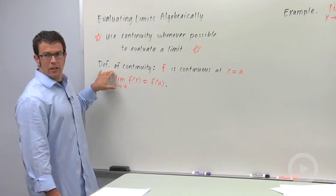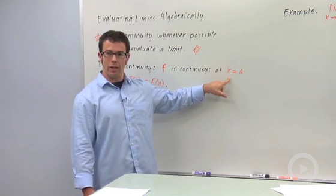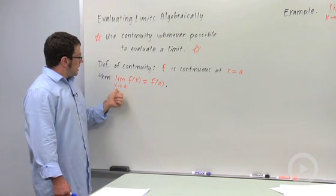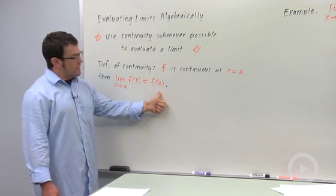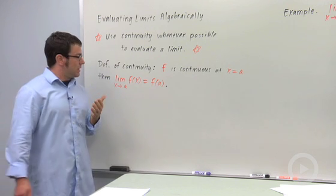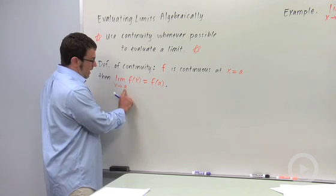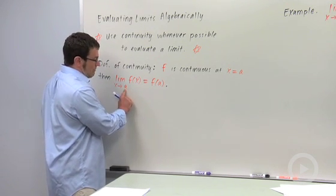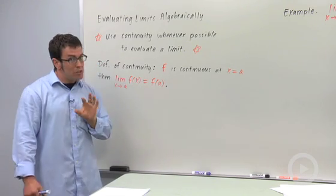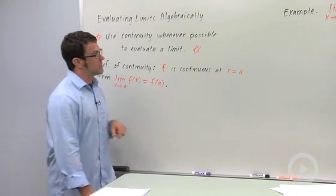Let's start with the definition of continuity. A function f is continuous at a point x equals a. Then the limit as x approaches a of f of x equals f of a. What this means is when you're evaluating limits, you can basically plug in the value — as x approaches a, you can plug in the a value into f of x and that's the value of your limit. You can only do this for continuous functions, but luckily a lot of the functions we deal with are continuous.